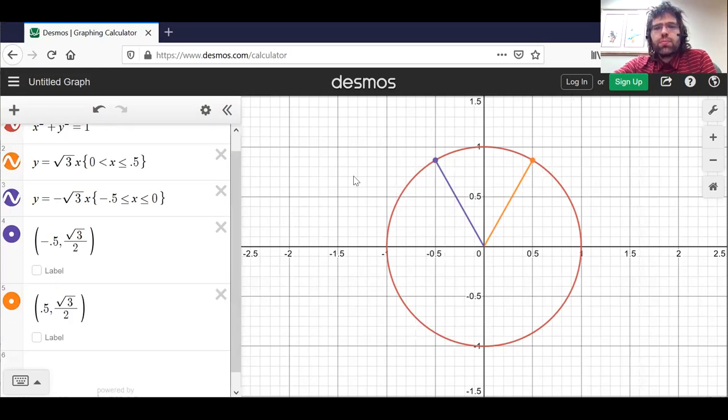Now, here's pi divided by three. The y-coordinate of this point is this vertical distance.